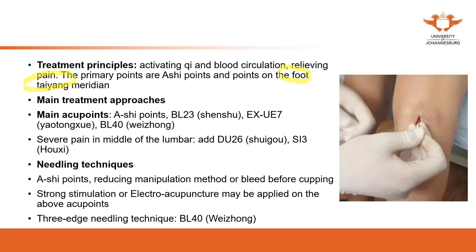We use local points such as BL23. For the acupuncture points, we use UE7 (Yaotong), which is on the hand, and Wei Zhong (BL40). For BL40, you can use a pricking technique to cause bleeding, especially if you can see blue veins around BL40. In the middle of the lumbar, you can use CV, SJ3, with strong stimulation — using your hand, electricity, or three-edge needling technique at BL40 to cause bleeding.